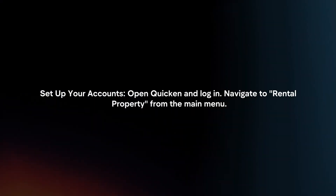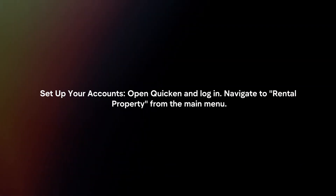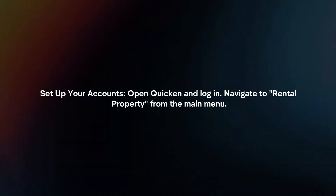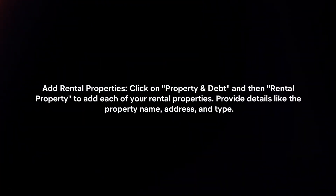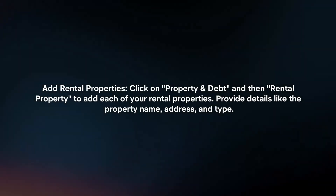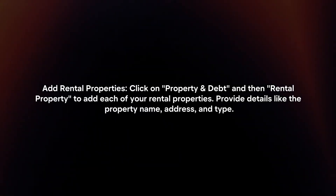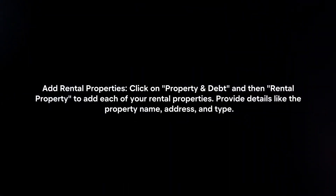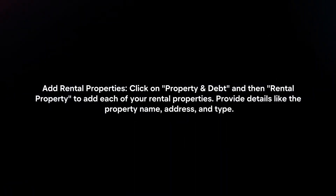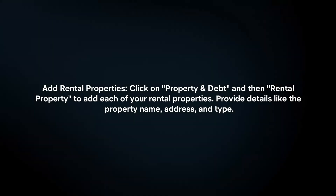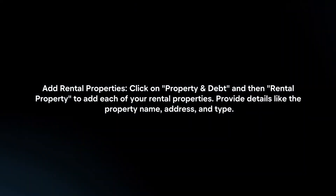Set up your accounts. Open Quicken and log in. Navigate to Rental Property from the main menu. Click on Property and Debt, then Rental Property, to add each of your rental properties. Provide details like the property name, address and type.